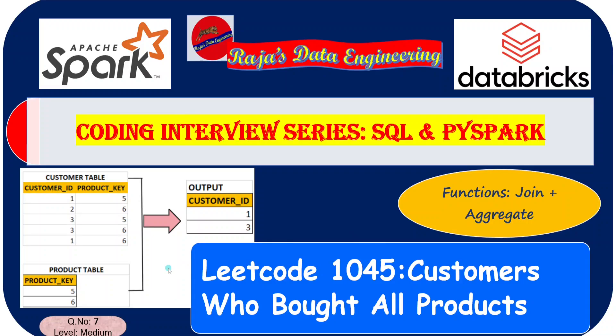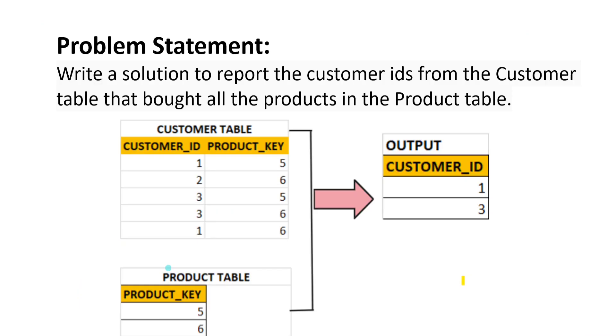Hello friends, welcome to Rajas Data Engineering. In this video, I am going to solve one of the LeetCode SQL coding exercises. The LeetCode exercise number is 1045, and the complexity level is medium. The problem statement is we need to find the list of customer IDs who bought all the products from the product table.